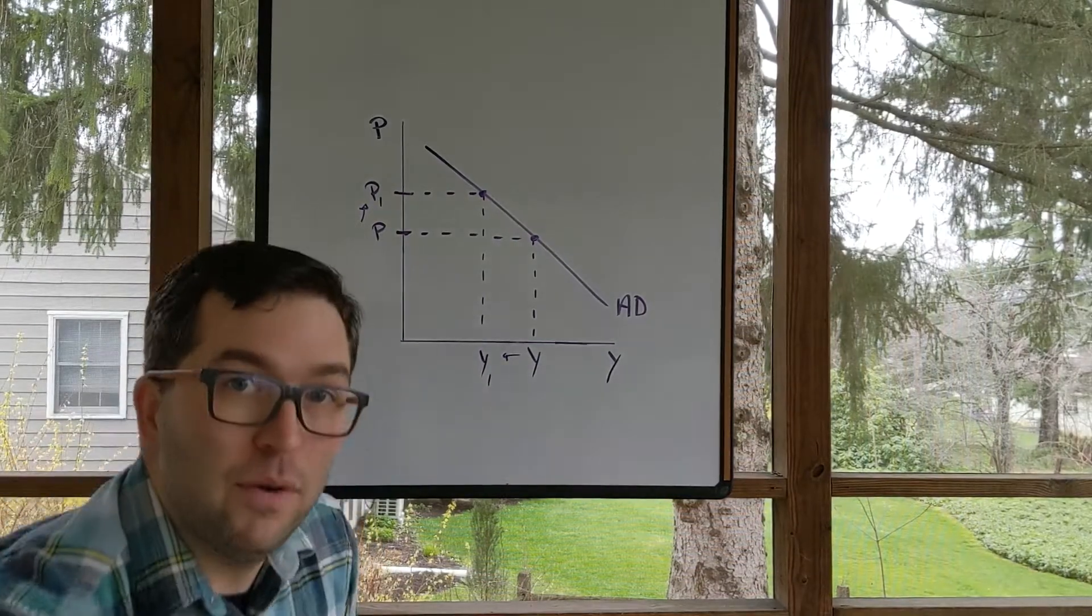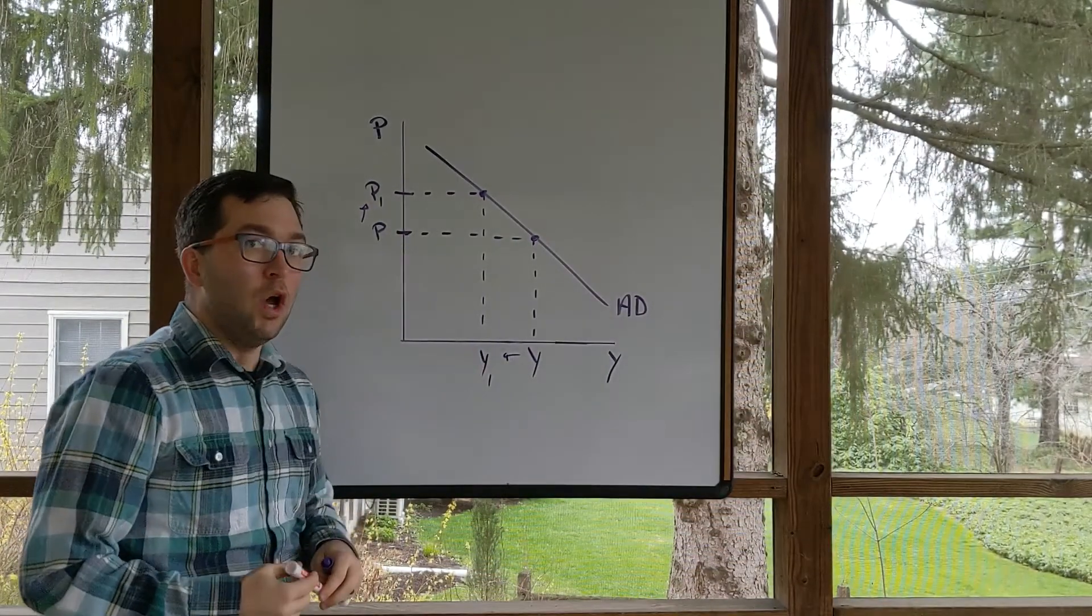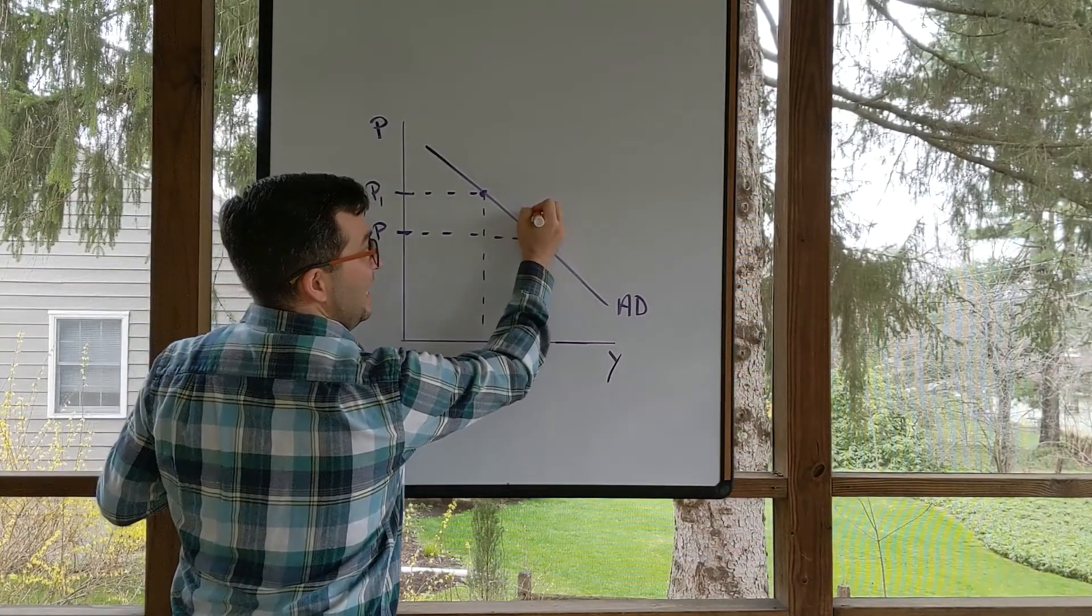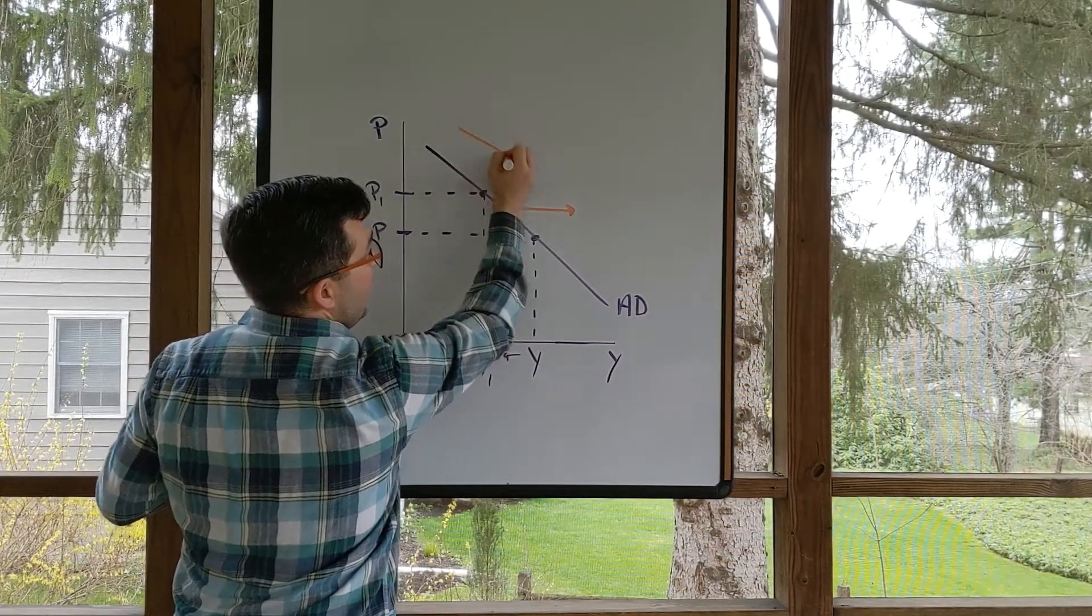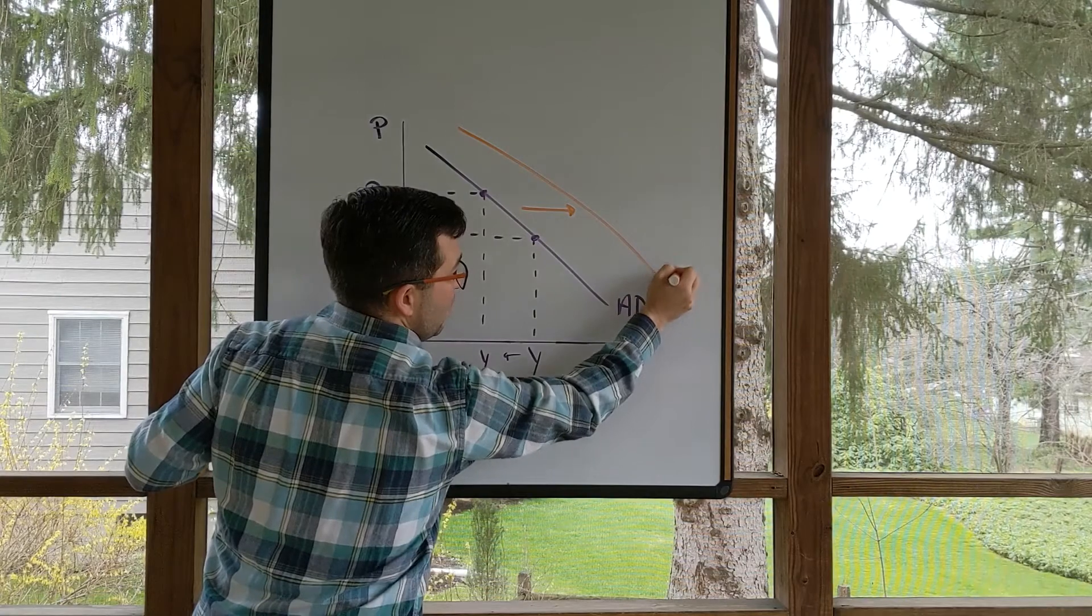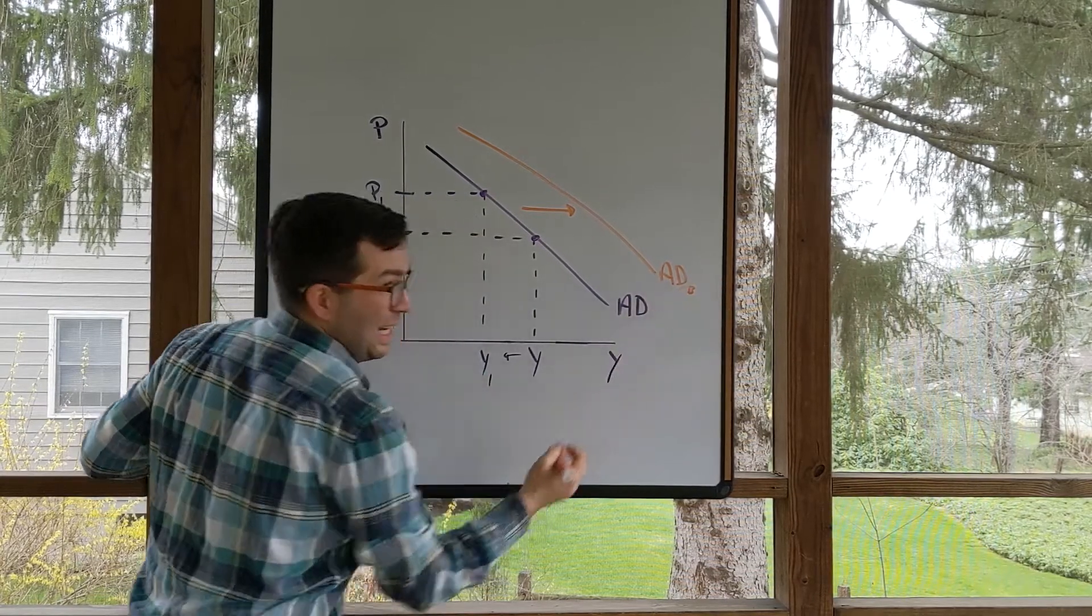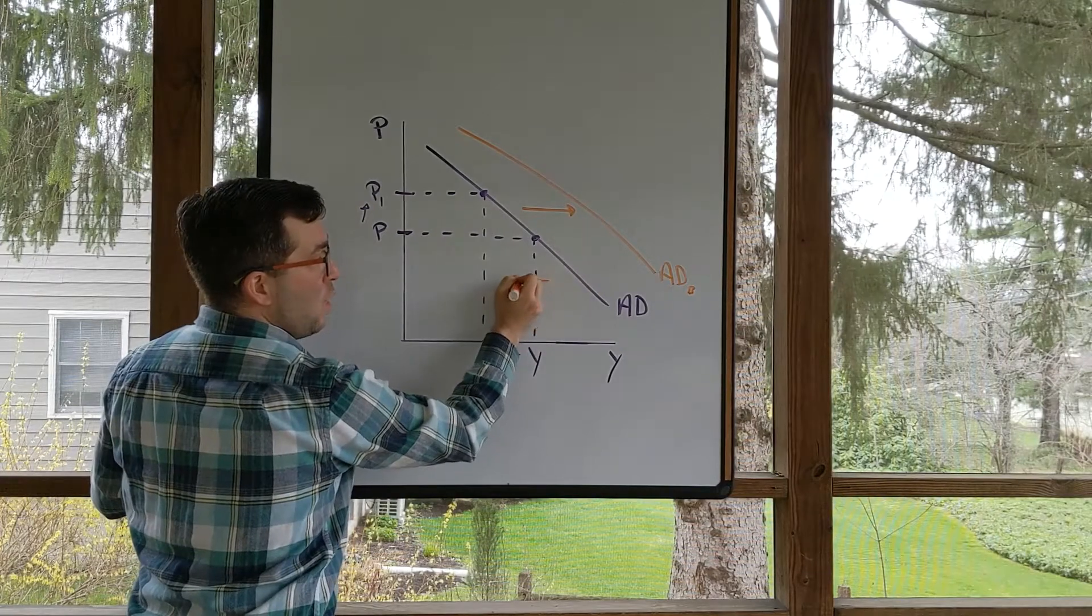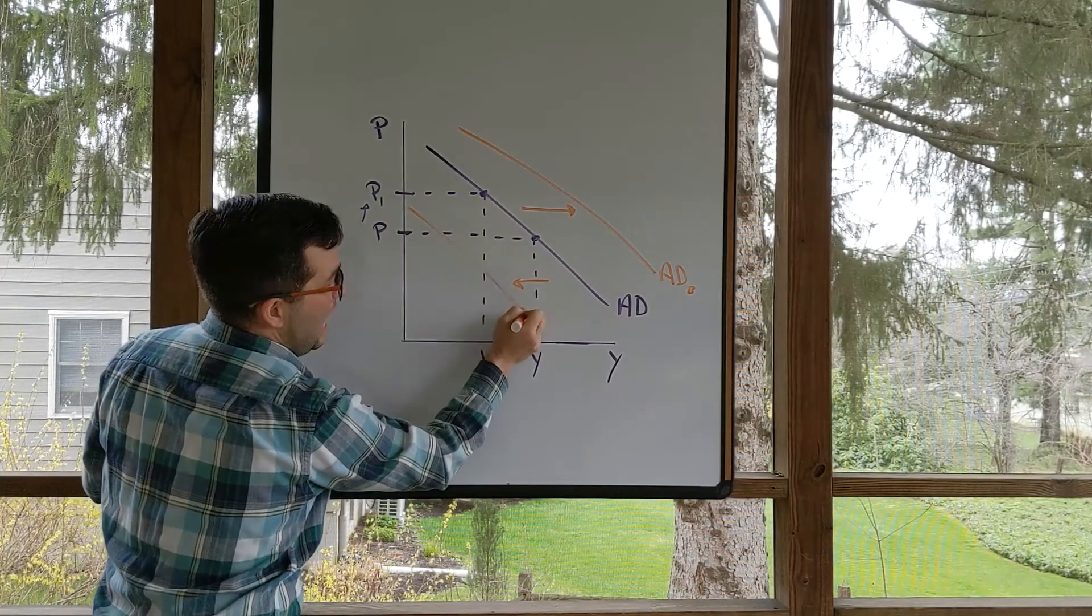We could also see aggregate demand shift. Perhaps we see an increase in aggregate demand. We see some sort of aggregate demand B, a second aggregate demand. This would be an increase in aggregate demand, or we could see a decrease in aggregate demand.